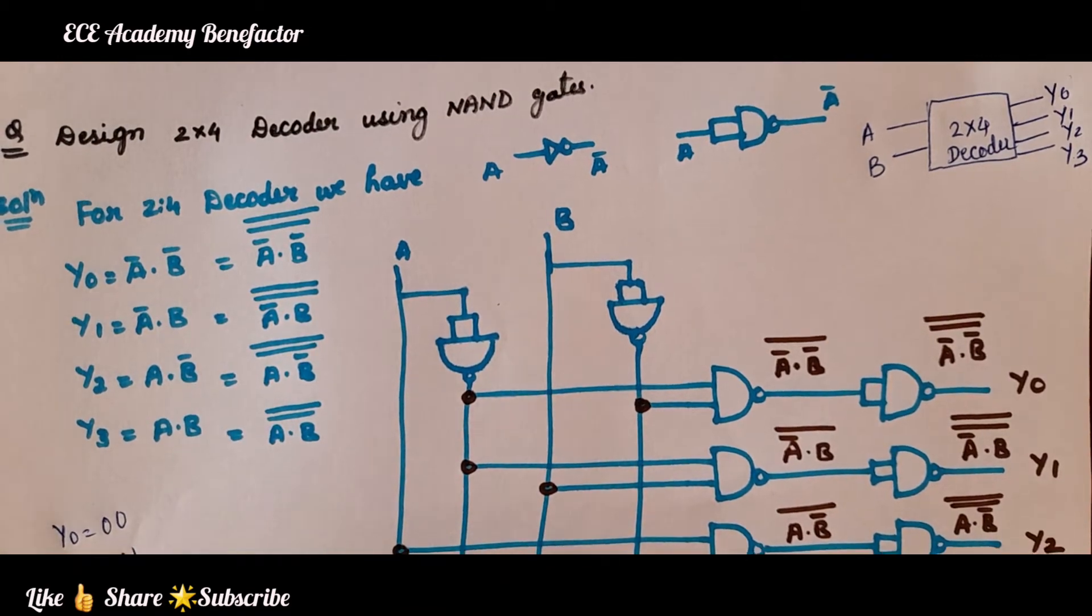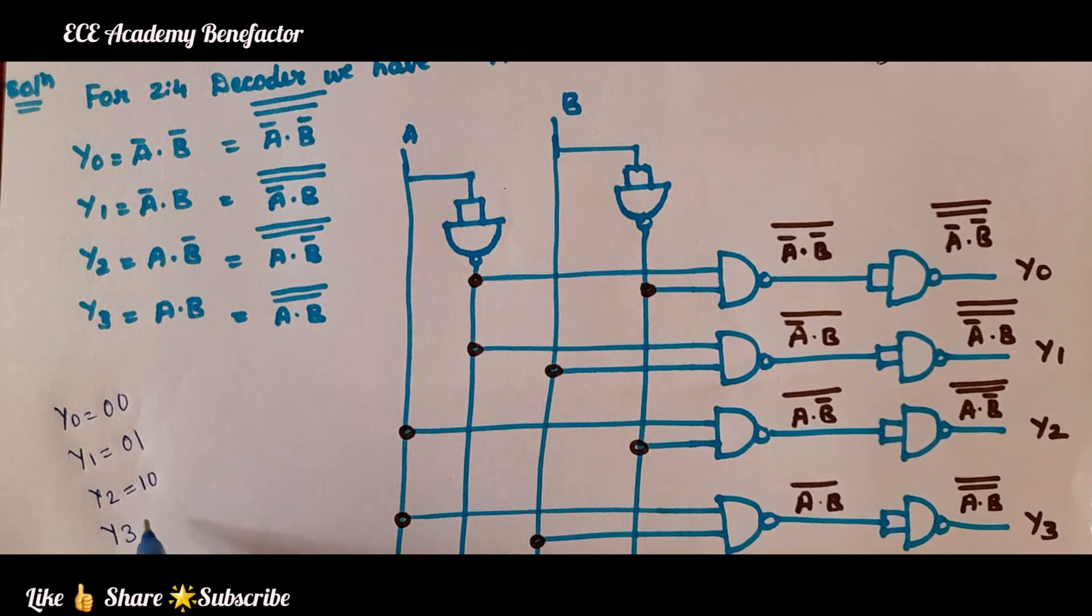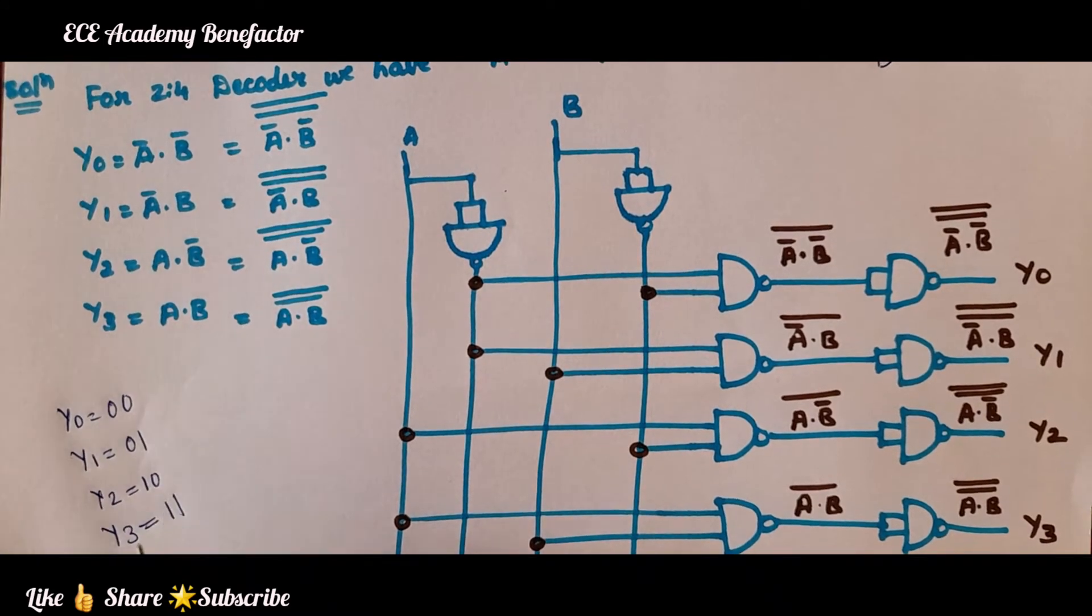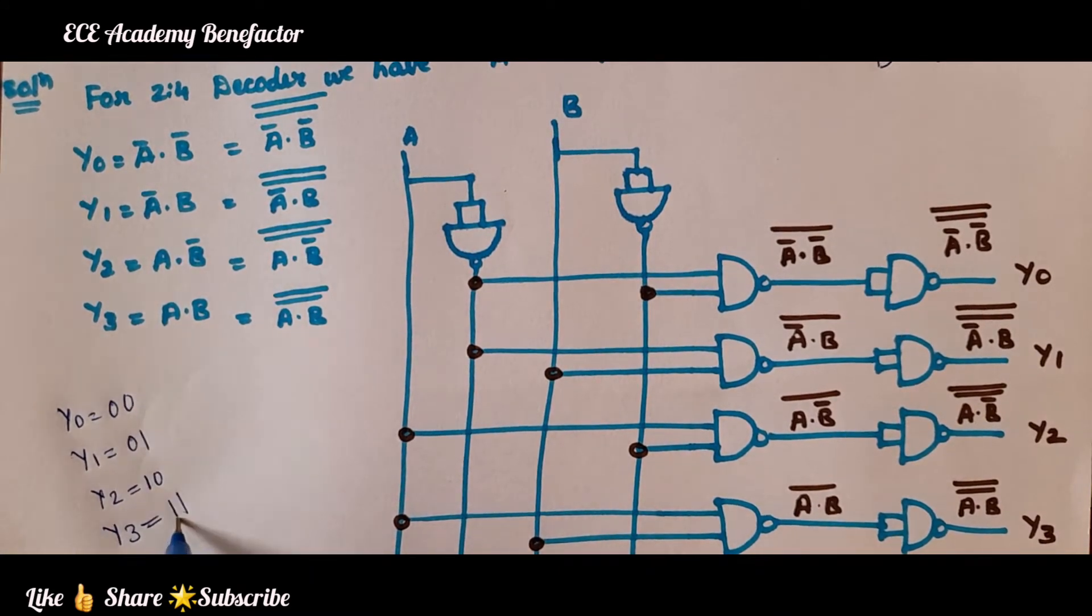y3, what is y3? y3 is equal to 1 1, which means A·B.